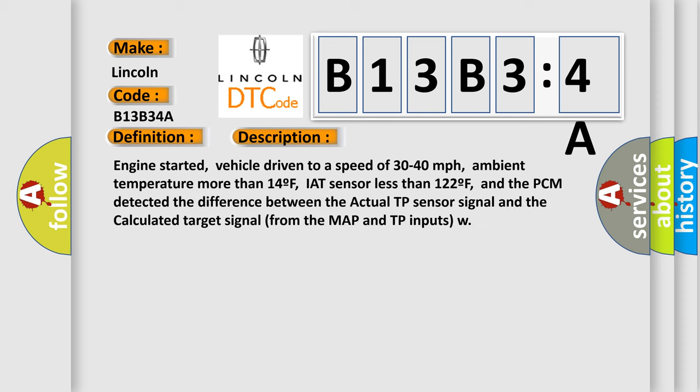Engine started, vehicle driven to a speed of 30 to 40 miles per hour, ambient temperature more than 14F, IAT sensor less than 122F, and the PCM detected the difference between the actual TP sensor signal and the calculated target signal from the MAP and TP inputs.